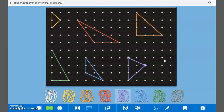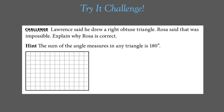Use the geo board to answer the challenge: Dana says it is impossible to draw a right triangle that is also acute — use the interactive geo board to test your ideas and explain in writing. Here's another challenge: Lawrence said he drew a right obtuse triangle; Rosa said that was impossible. Explain why Rosa is correct. Hint: the sum of angle measures in any triangle is 180 degrees — think about how many degrees a right angle is and how many degrees an obtuse angle is.